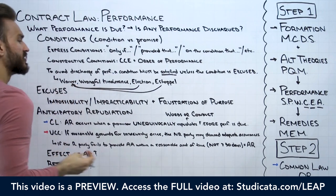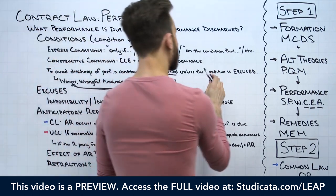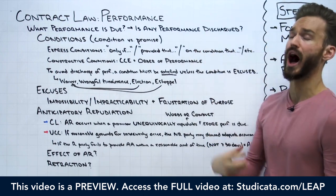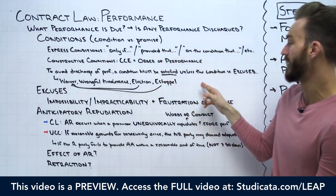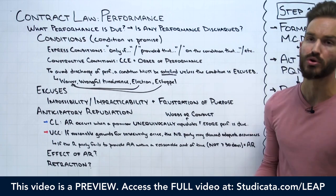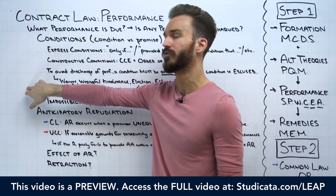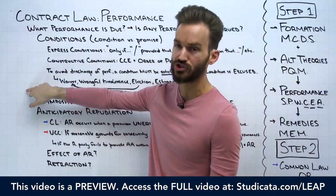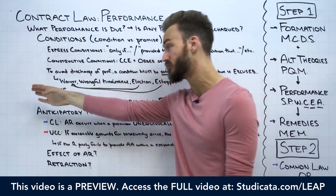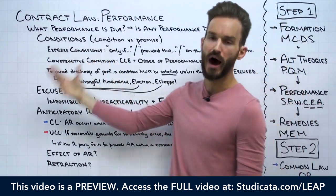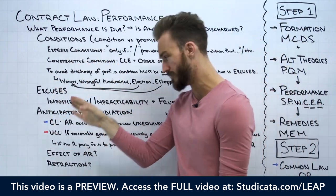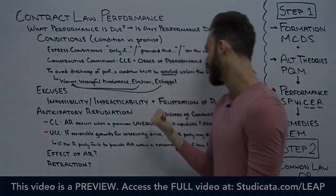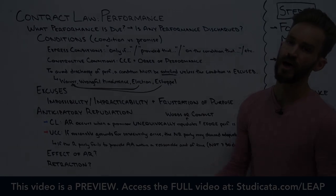To summarize, the non-occurrence of a condition will discharge performance unless the condition has been excused — through waiver, wrongful hindrance, election, or estoppel. That's a great segue to our next topic for ways performance can be discharged: actual excuses, which are actual doctrines — the doctrine of impossibility or impracticability, and the doctrine of frustration of purpose.